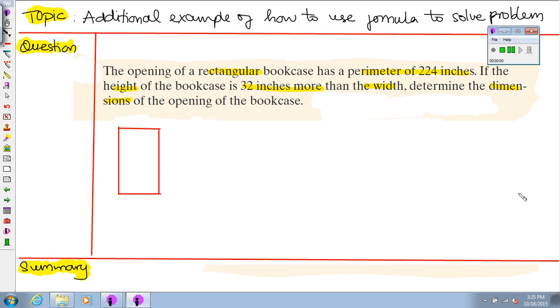Hello, my math independent study student. In this video, we are going to practice with an additional example of how to use formulas to solve problems. Let's begin with the following problem: the opening of a rectangular bookcase has a perimeter of 224 inches. If the height of the bookcase is 32 inches more than the width, determine the dimensions of the opening of the bookcase.